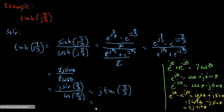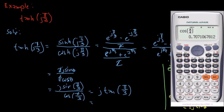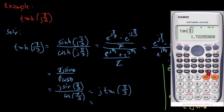Now we will use our calculator. So tangent of π/3 — that is equal to square root of 3, or approximately 1.73. So our answer becomes j·1.73, and this is the equivalent of hyperbolic tangent of j·π/3.